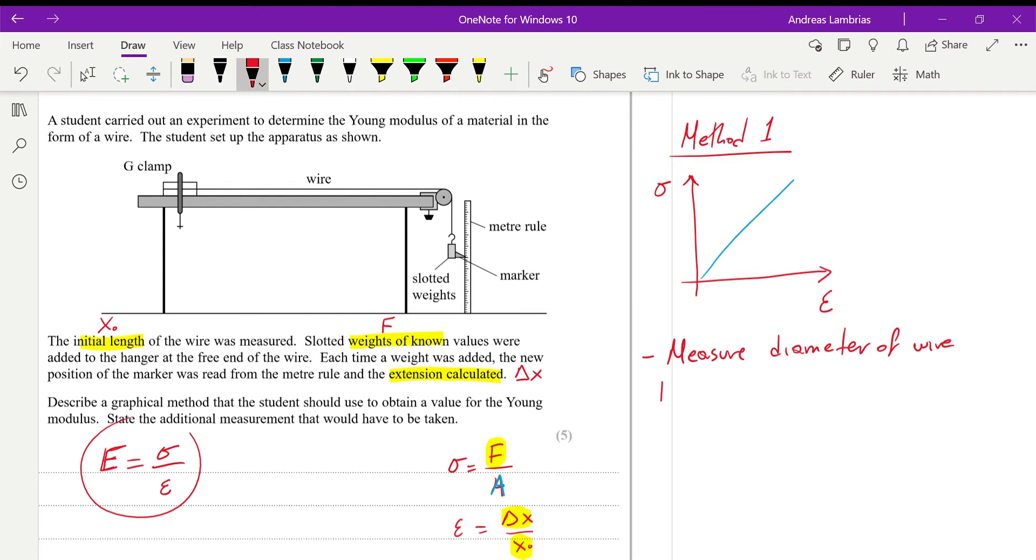And then, using the diameter, of course, we need to calculate the cross-sectional area. Alright, how do we do that? It's a circle, therefore, it's pi d over 2 squared. And that, of course, will give us pi d squared over 4. Alright, so we're getting the diameter. We're using that to calculate the area.